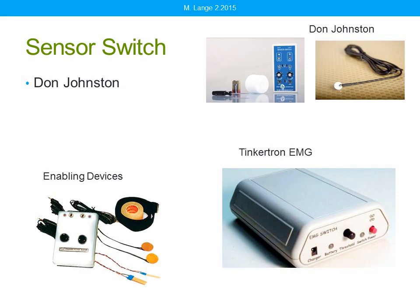Enabling Devices also has an eye blink switch using infrared technology mounted on eyeglasses. Touch switches are available too but require a little bit of force, and the targets are sometimes just a little too big to capture very small movements. Sensor switches have a sensor placed over a muscle that picks up activity — for people with muscle weakness this is often used over the eyebrows, placed on a headband. I do not recommend using eye blink or sensor switches for power mobility because vibration from the power wheelchair can trigger the switch. Sensor switches are available from Don Johnston, Enabling Devices, and there's the newer Tinkertron EMG switch.